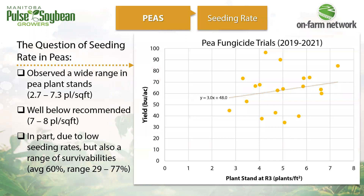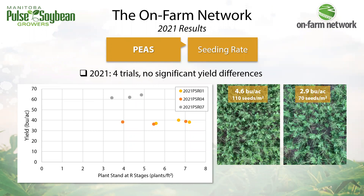Pea seeding rate trials were new this year. Something we noticed while doing plant counts in fungicide trials over the last few seasons was that pea plant stands were all over the place. This graph shows plant stands at R3 in plants per square foot from those fungicide trials over three years — they were almost never up to the recommended plant stand from small plot research, which is seven to eight plants per square foot. However, we are seeing some good yields at what would be considered low plant stands. This raised questions: are we leaving yield behind, and why are plant stands so low? On average, only about 60% of the seed put into the ground became a reproductive plant at R3.